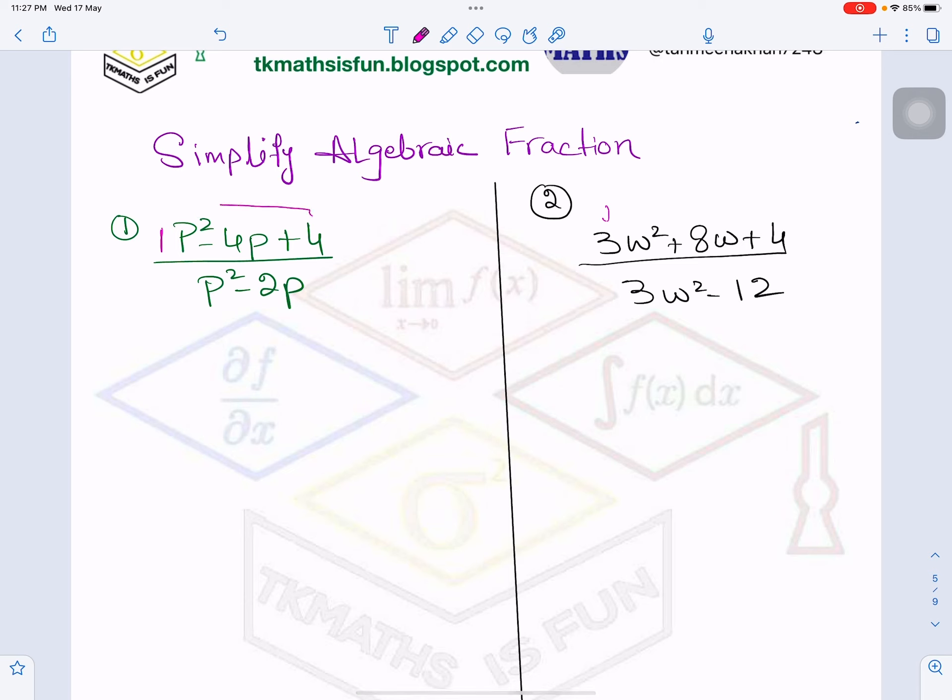We will multiply constant by the coefficient of P². So 4 times 1 is 4. What are the factors? 4 times 1 is 4 and 2 times 2 is 4. Now which pair? If you add or subtract, gives you minus 4, which is here. So 2 plus 2 is 4, but I want minus 4. So I will do minus 2 and minus 2, so it will be minus 4.